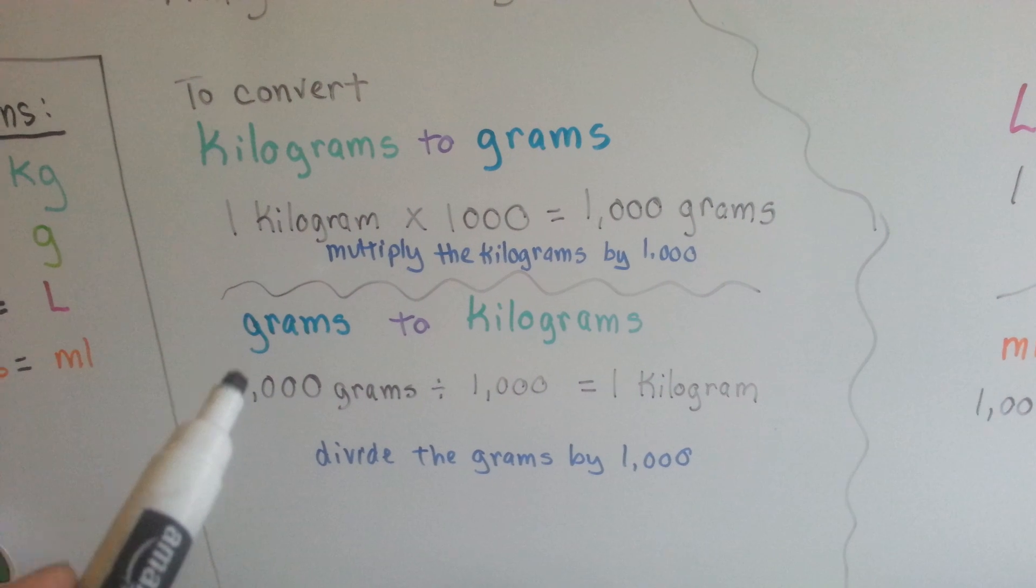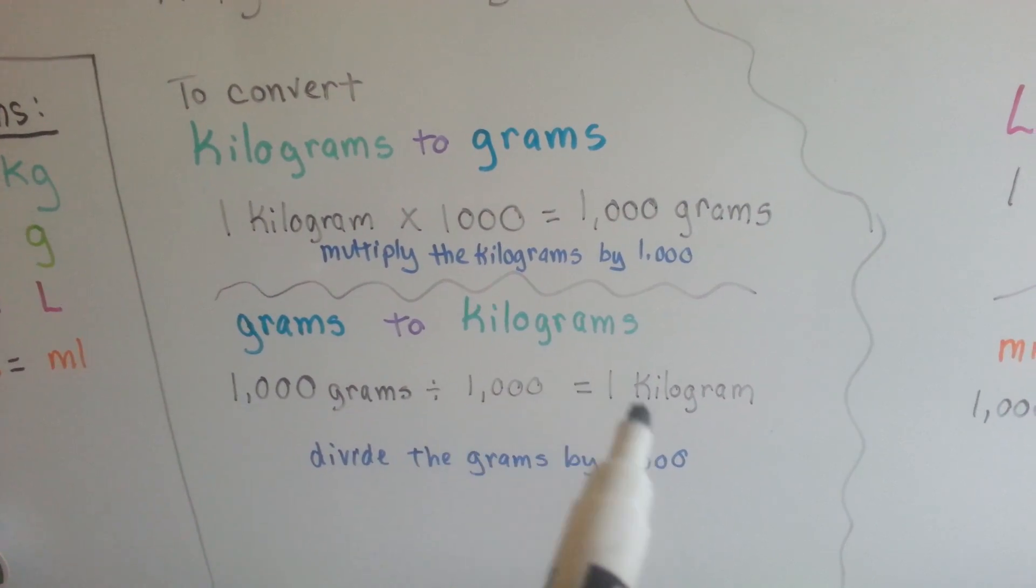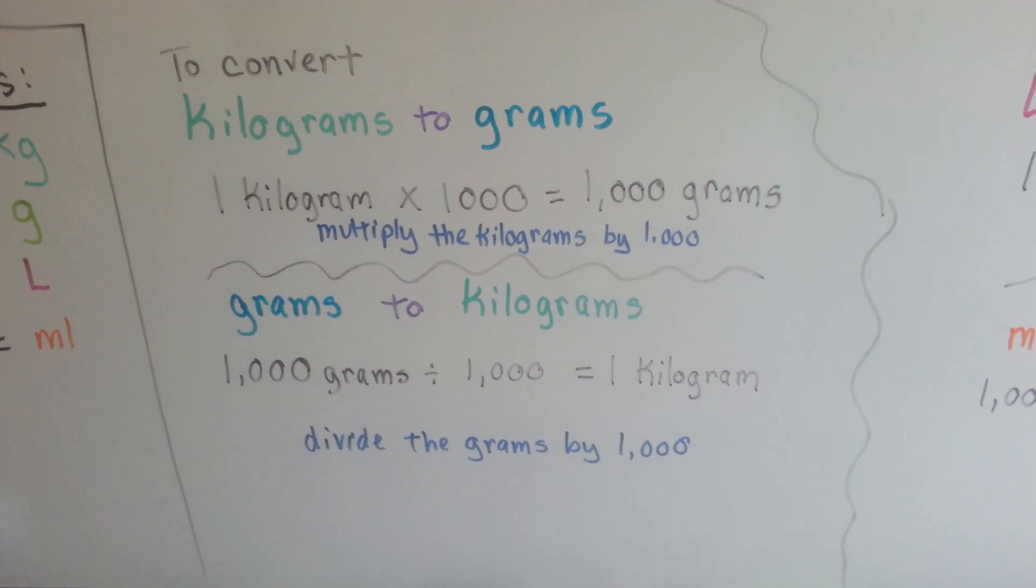If you had four thousand grams, you divide it by a thousand and it tells you there's four kilograms. See?